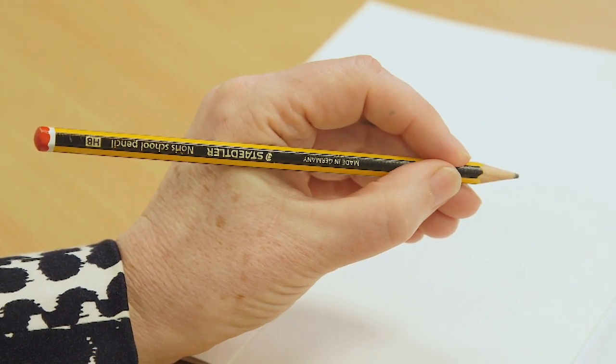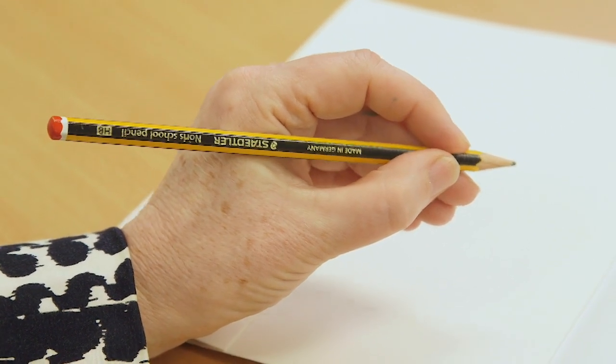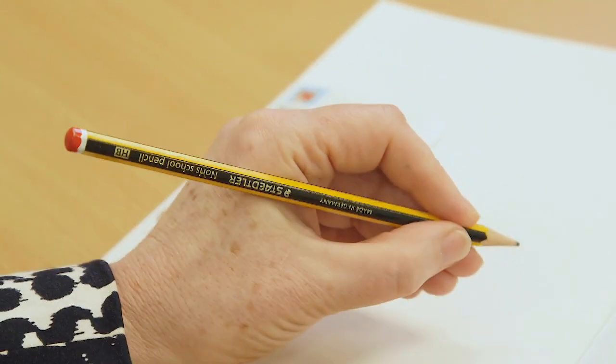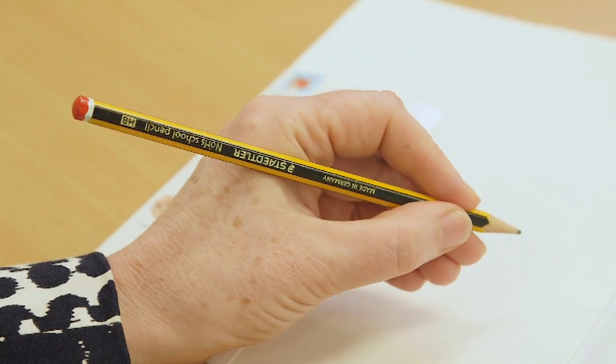Left-handed children should hold their pencil in exactly the same way as a right-handed child. The pencil is held between the forefinger resting on the first knuckle of the middle finger. The pencil should be held about a centimeter from the tip. The hand should be kept below the writing line.